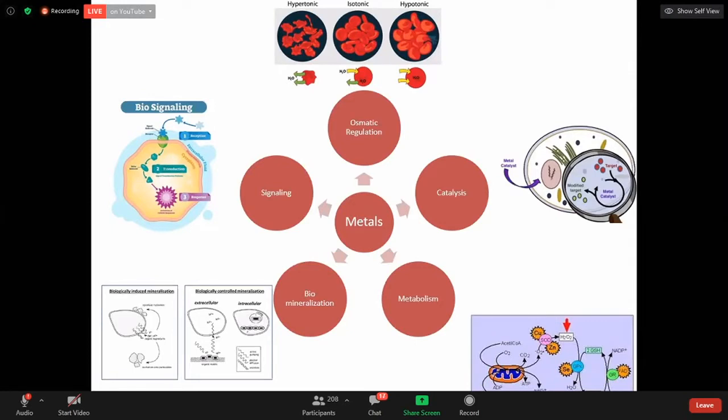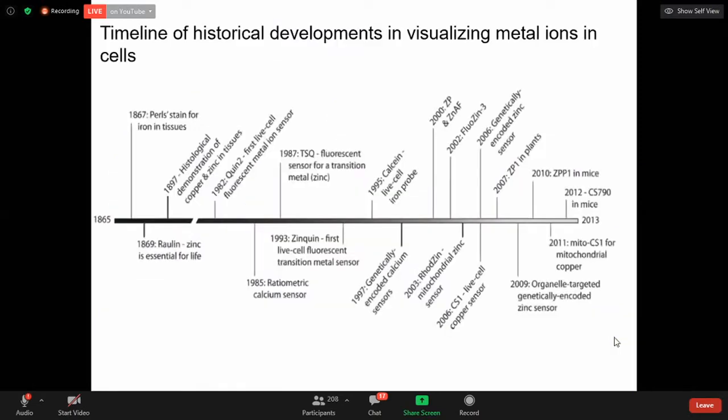Here first one is osmotic regulation. You can see the water has been entered into cell plasma with the help of metal ions. And the second one is metal catalysis which facilitates the reaction happening inside the cell. And the third one is the biological synthesis. Biomineralization and metabolic activity already I explained here.